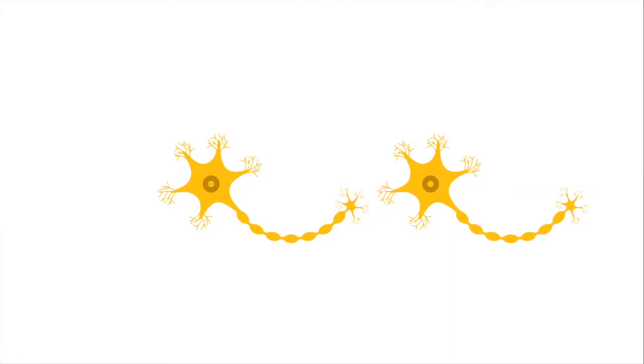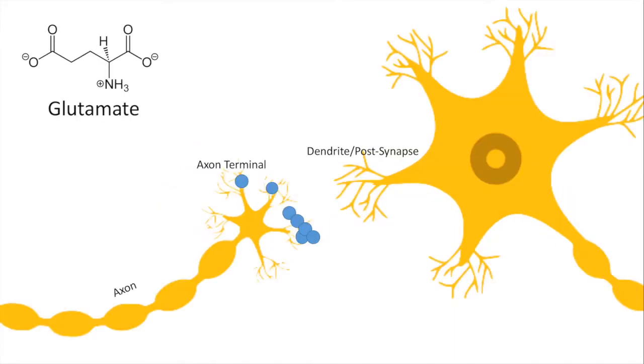The location of long-term potentiation is between two neurons, specifically the synaptic cleft. Glutamate is the major neurotransmitter involved in long-term potentiation. When action potential travels down the axon of presynaptic neuron, glutamate is released from the axon terminal.